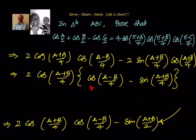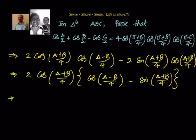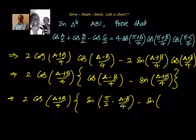Now we can apply a transformation only when both trigonometric ratios are the same. So we convert cos to sin using the identity cos θ = sin(π/2 − θ). In the next step, we write: 2 cos((A+B)/4) · [sin(π/2 − (A−B)/4) − sin((A+B)/4)].